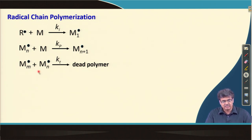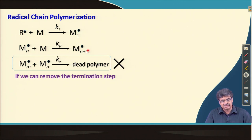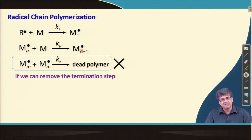Now, if somehow we can remove this termination step which produces dead polymers, then what happens? This propagating radical will continue to propagate without undergoing any termination reaction. And for the time being, let us also assume that there is no chain transfer reaction in the system. So in the absence of any termination and chain transfer reaction, this propagating radical will continue to polymerize as long as monomers are present in the system.